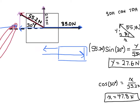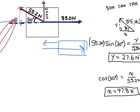Going back to the original triangle, the x component of 47.8 newtons corresponds to the blue arrow going in the opposite direction, and the y component of 27.6 newtons corresponds to the purple arrow. Now I can add up all of the vectors and form a new triangle. Since we are dealing in two dimensions, I want to add up all of the y's, add up all of the x's, and form a new triangle.